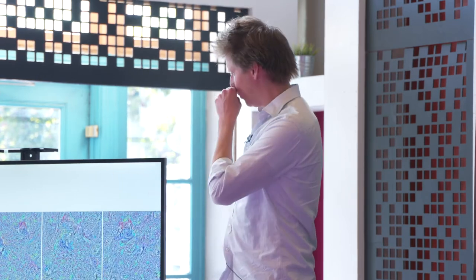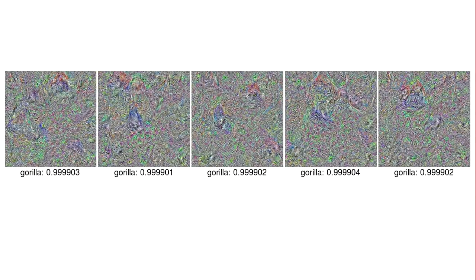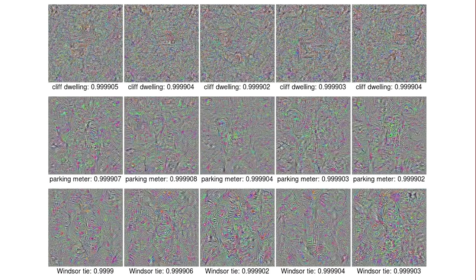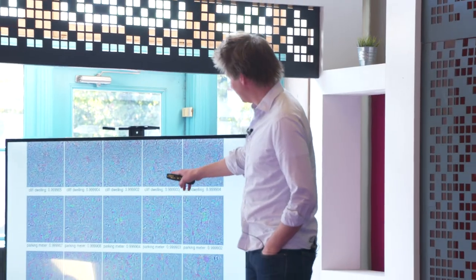We tried it for different classes. So here's—the network thinks this is a cliff dwelling or a parking meter or a Windsor tie, all above 99.99%.